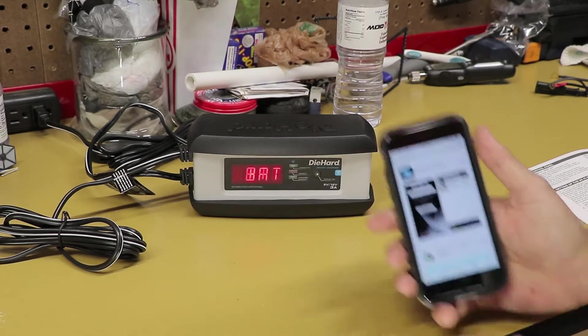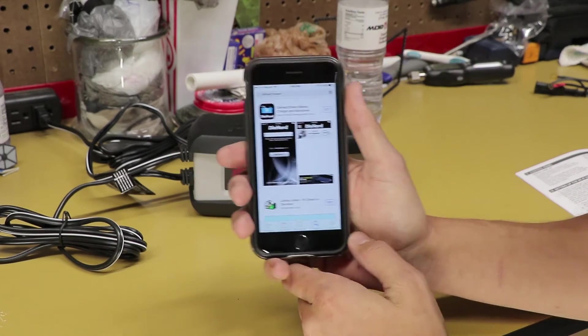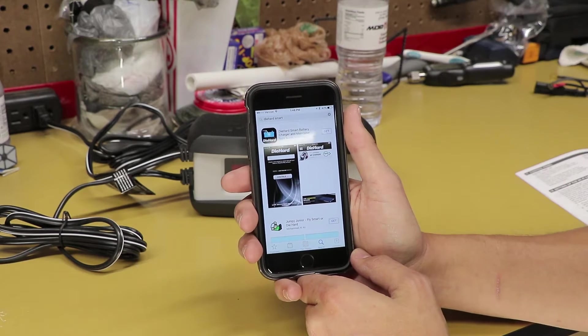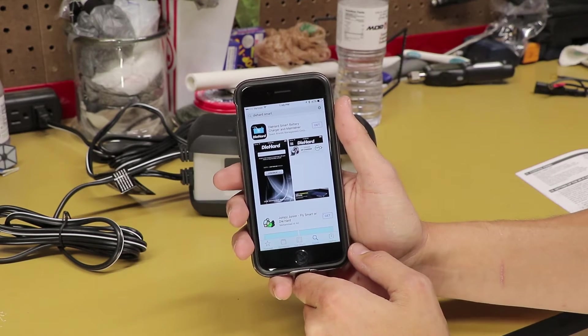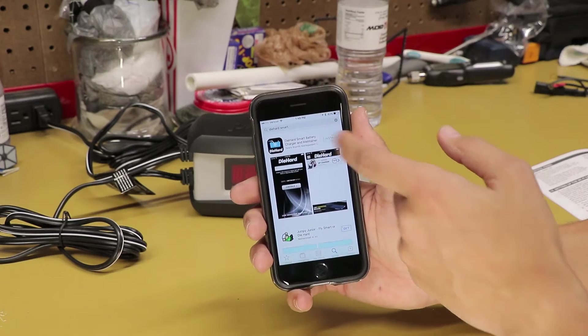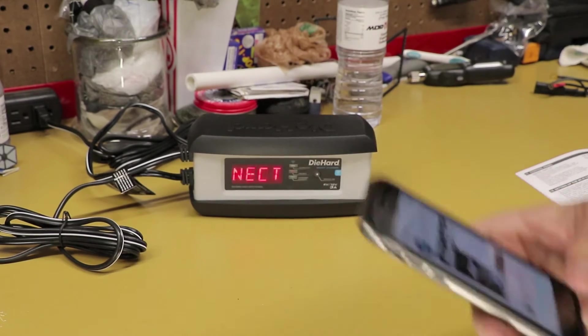So now on to the Wi-Fi section of this. First, you're going to need to download the app. So if you just search on your App Store diehard smart battery charger and maintainer, that will pop up. And obviously go ahead and install that.